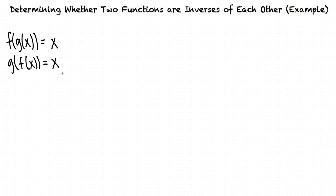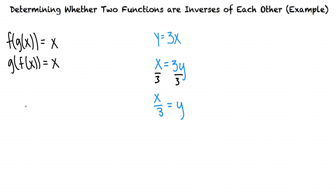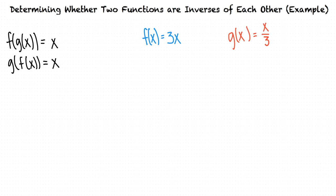Say we're given the function y equals 3x. Let's find the inverse of that function. To do this, we'll switch the x and y values, then divide by 3 on both sides to get y by itself. So our original function is y equals 3x, and the inverse of that function is x over 3 equals y. Let's call our original function f of x and our inverse function g of x.